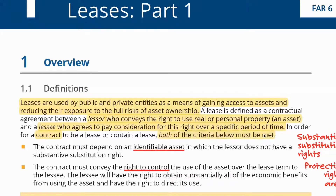Which criteria specifically? First, there should be an identifiable asset. The contract must depend on an identifiable asset — it might be a car, a building, a plot of land, or a machine. By identified asset, we don't necessarily mean a specific car with a specific plate number, but it should be a specific type of asset. The contract must depend on an identifiable asset in which the lessor does not have a substantive substitution right.